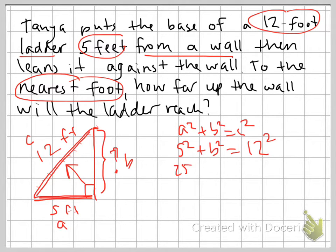5 squared is 25, B squared is our unknown, and 12 squared is 144. Now again, I need to isolate my variable, I want this by itself, so I have to undo this adding 25 by subtracting 25 on both sides of the equation.